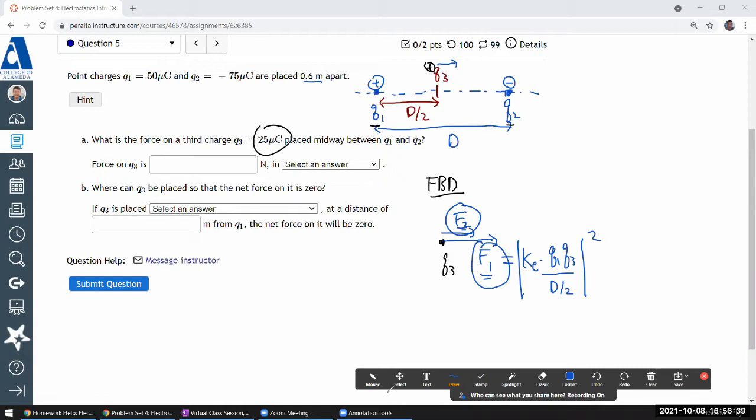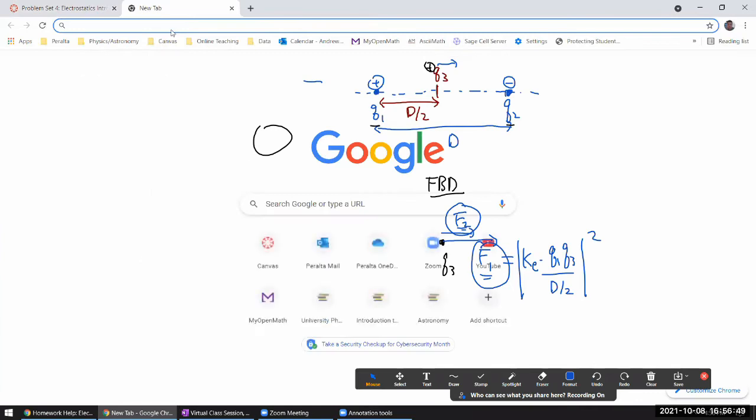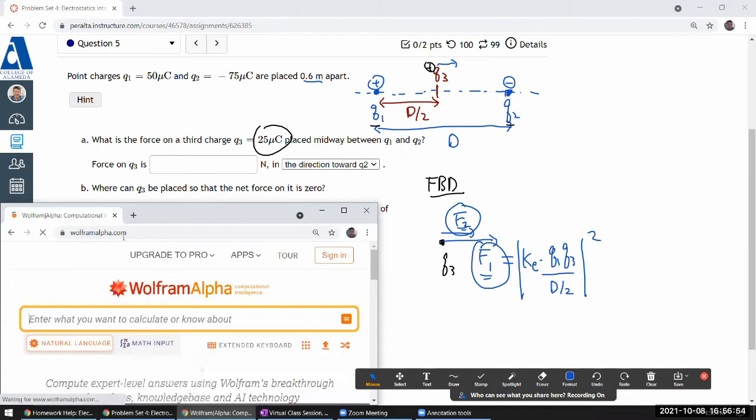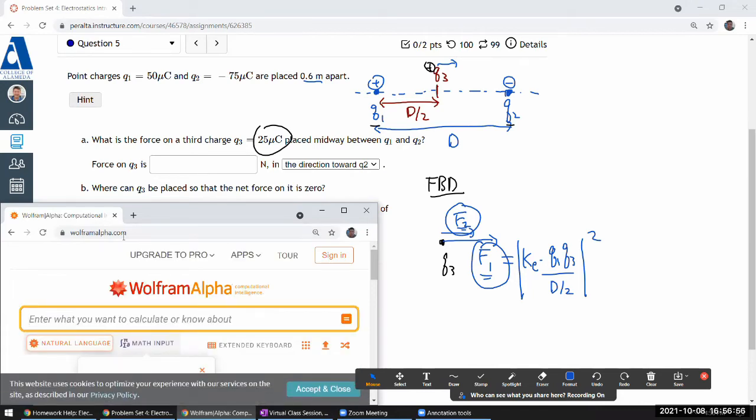I think that's about directions. So you say in the direction towards Q2, towards the negative charge. So let me plug in the numbers here. I can do this pretty quickly if I do this on Wolfram Alpha. Mainly because on Wolfram Alpha I don't have to look up any constants. I can say Coulomb constant and Wolfram Alpha will know what it is.